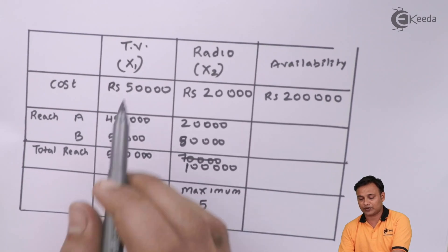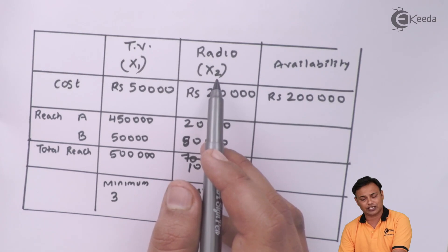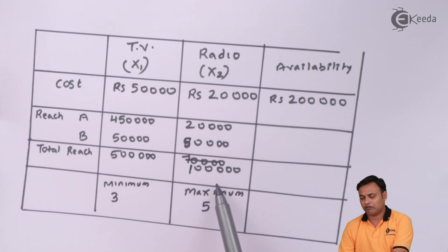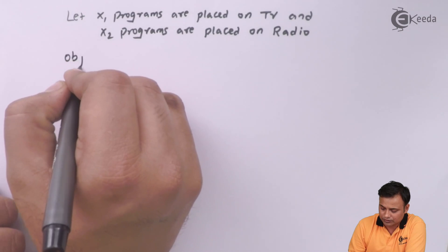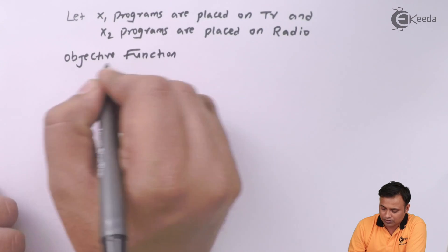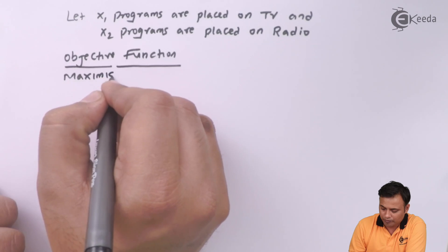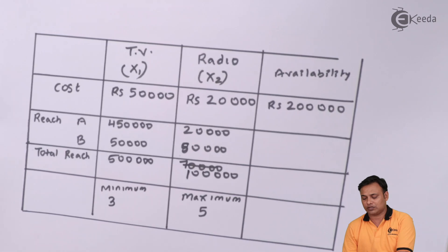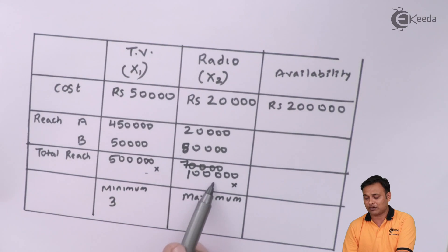The objective function is to maximize the reach. The reach for TV is 5 lakh viewers and for radio it is 1 lakh. So my objective function is: Maximize Z = 5,00,000 X1 + 1,00,000 X2.